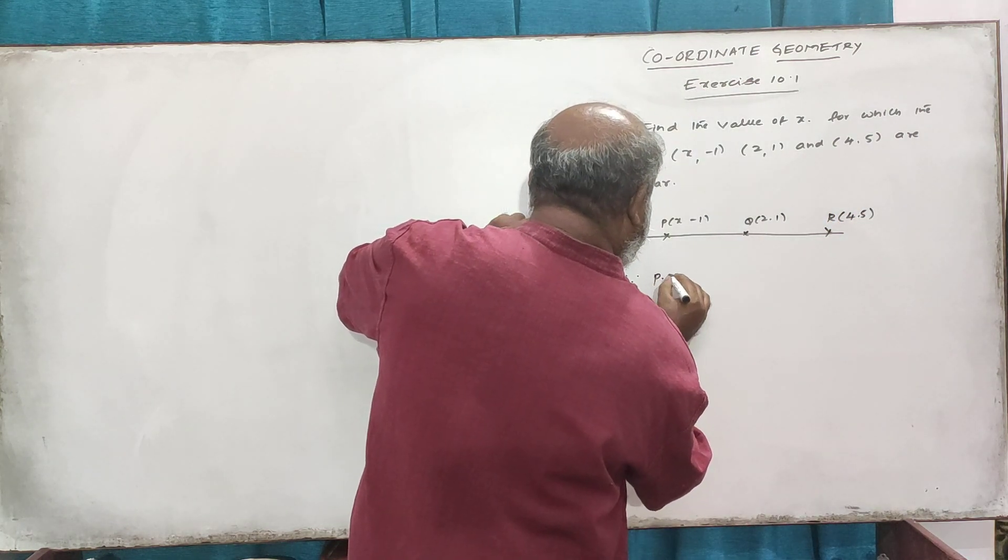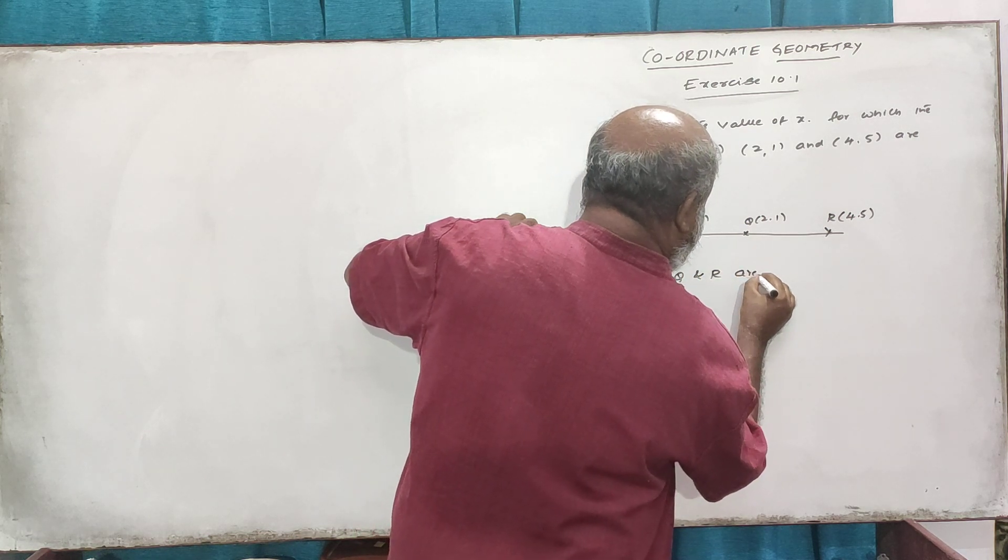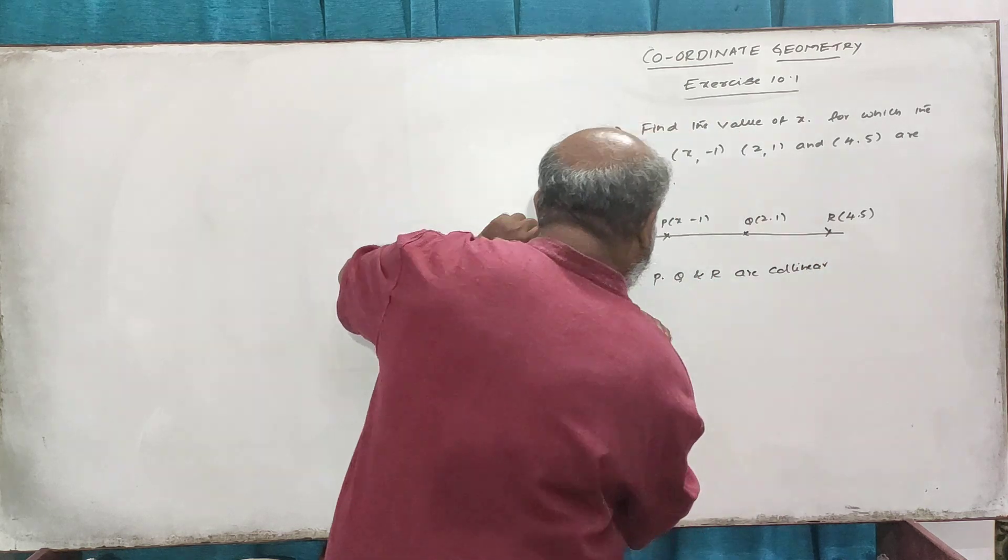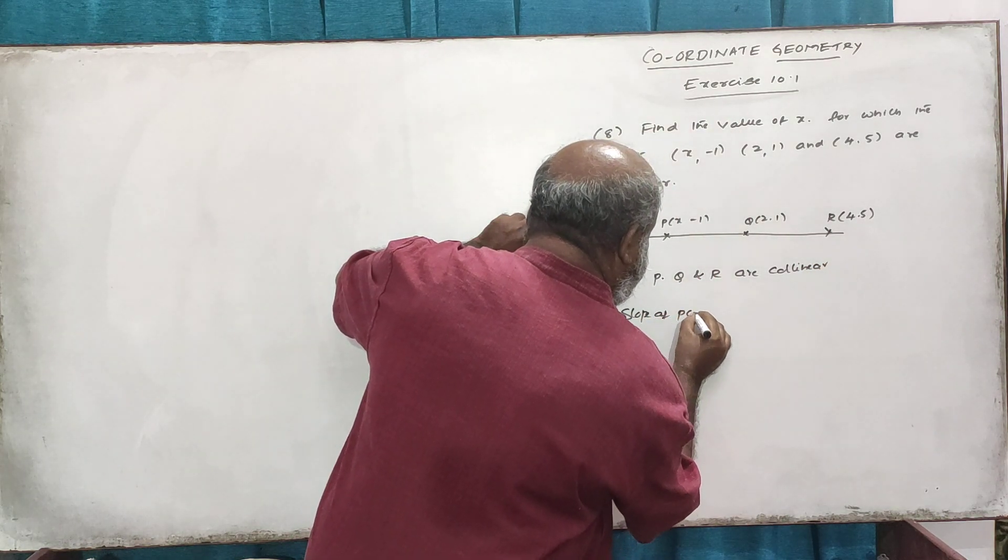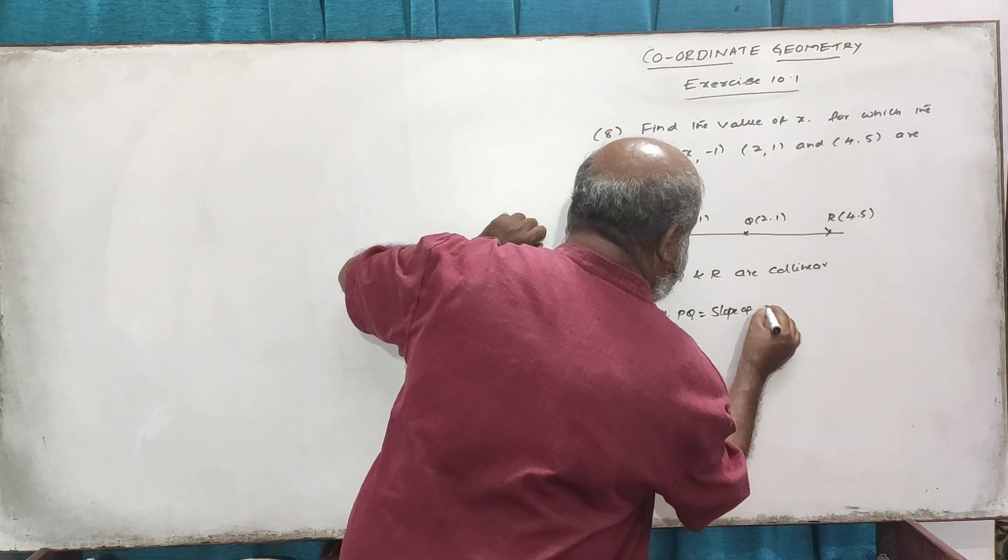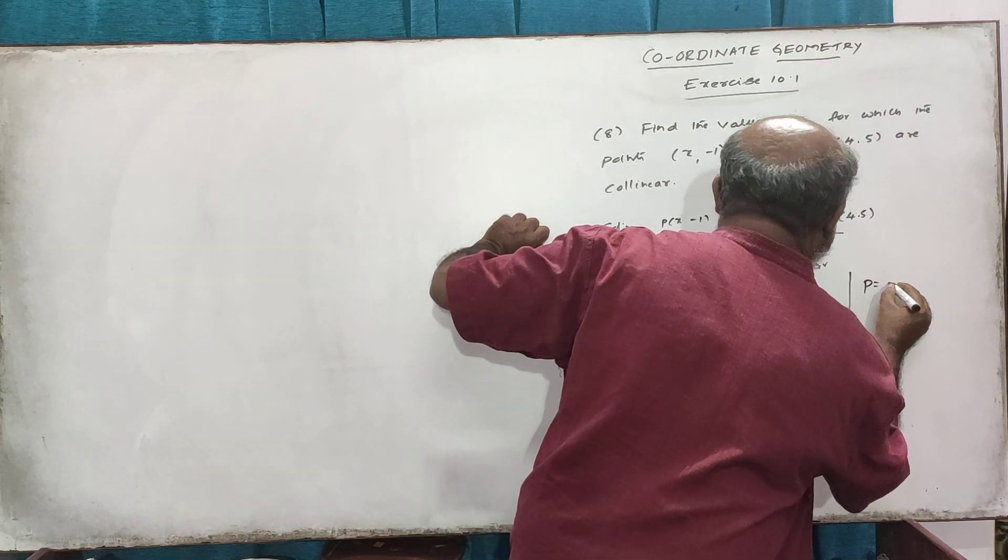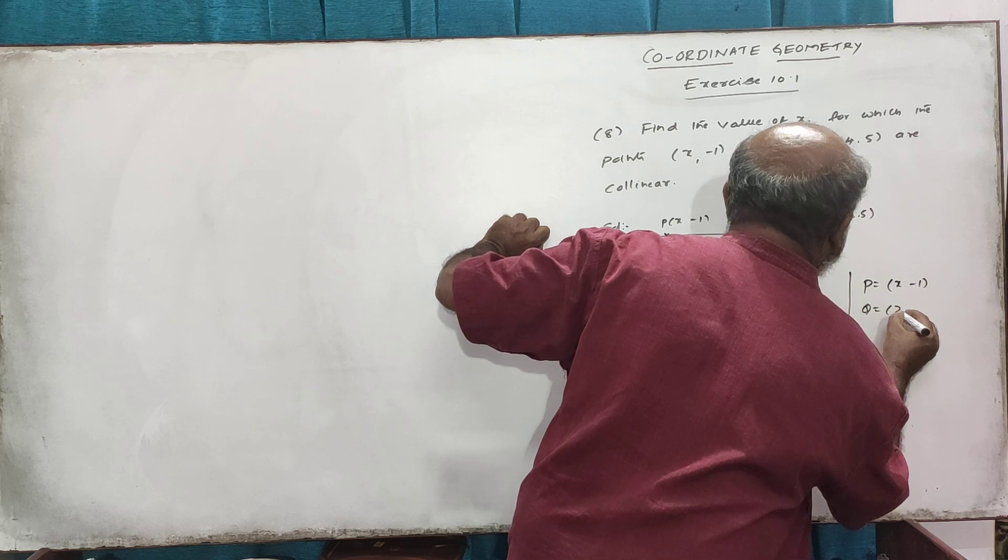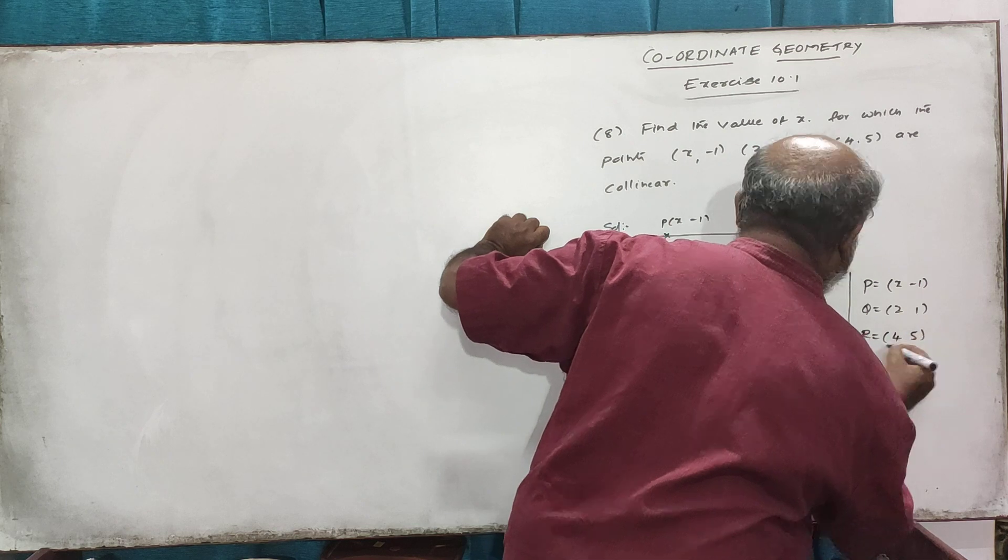Since P, Q, and R are collinear, the slope of PQ is equal to the slope of QR. P is at x comma minus 1, Q is at 2 comma 1, and R is at 4 comma 5.